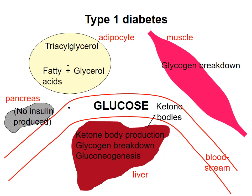Fortunately, type 1 diabetes can be controlled by regular insulin injections. Insulin is produced for medications using the kind of recombinant DNA technology techniques described elsewhere in this course.